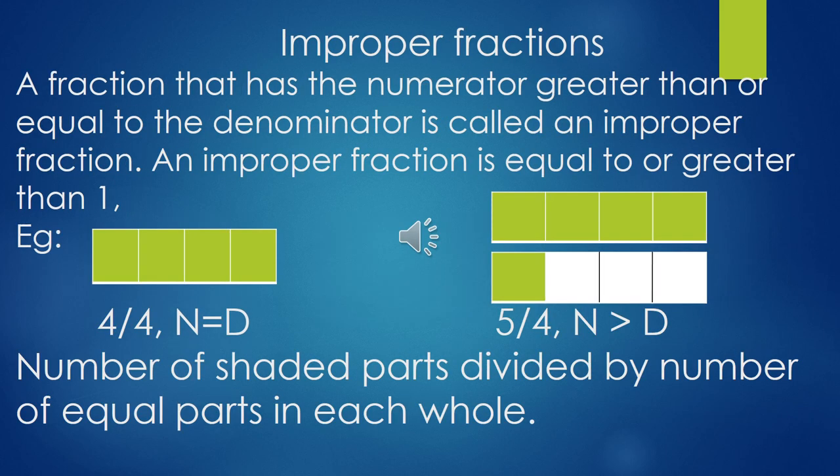Improper fractions: a fraction that has the numerator greater than or equal to the denominator is called an improper fraction. An improper fraction is equal to or greater than one. Example: four by four — numerator equals denominator.